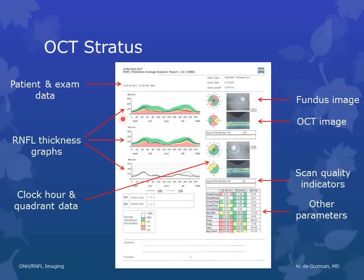The graphs should form a double or triple hump pattern that is within the green — that would be the normal result. The quadrant and clock hour data are flagged red, yellow, or green depending on whether they are normal, borderline, or outside normal limits. There are also other parameters such as ratios and averages which can be used for monitoring the patient over time.